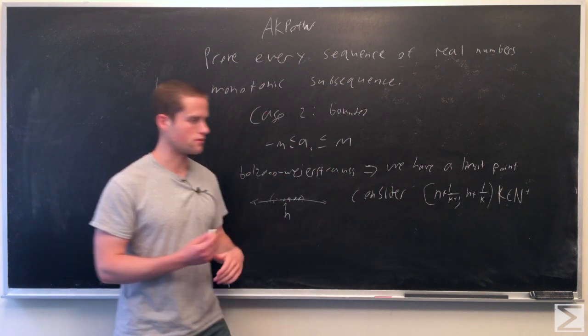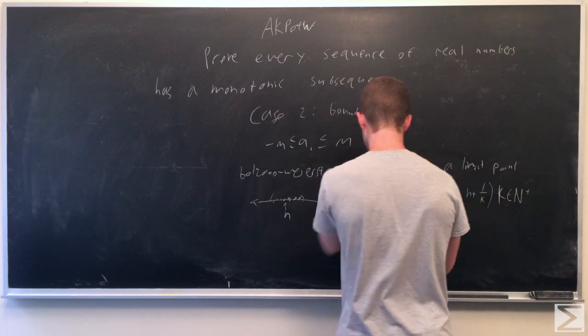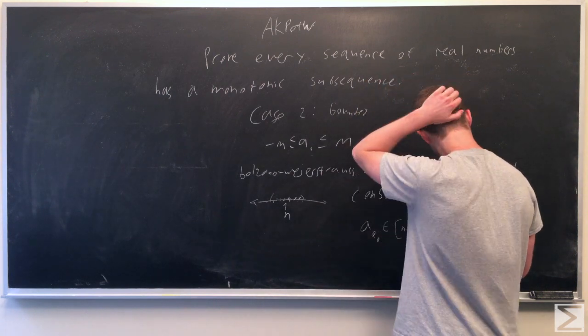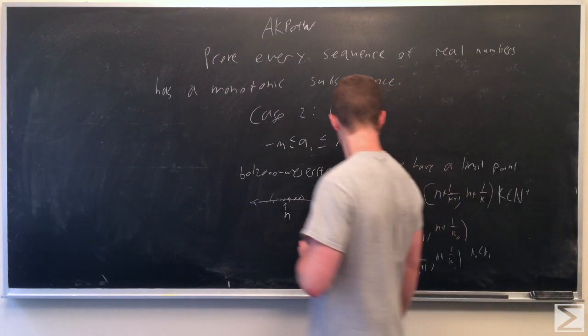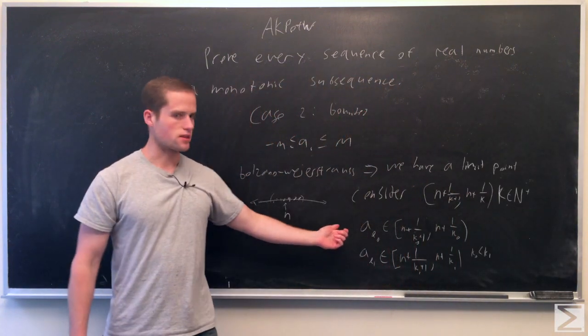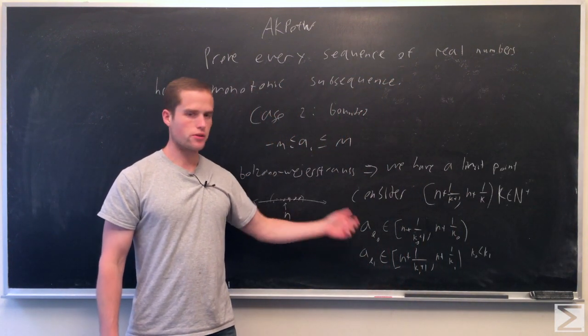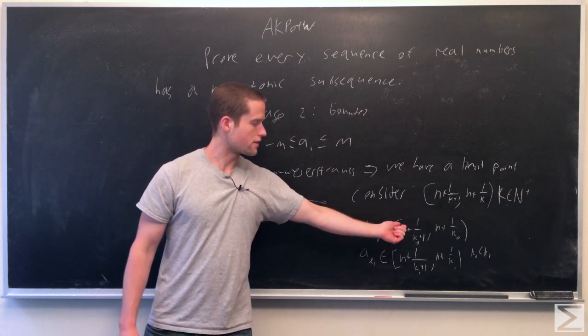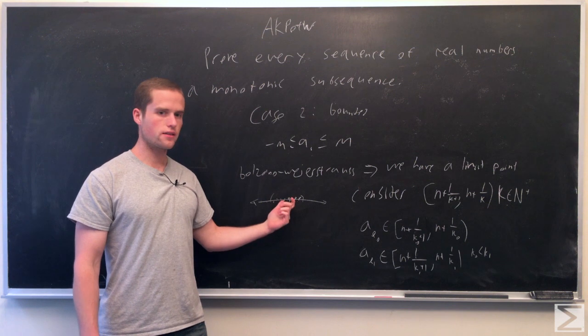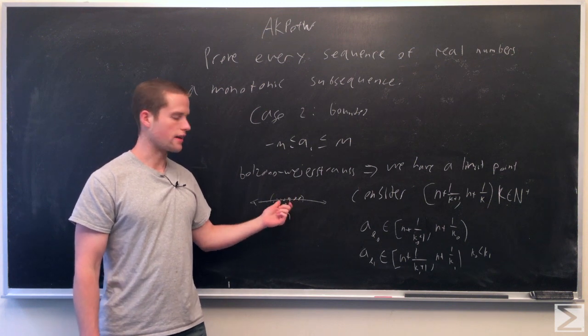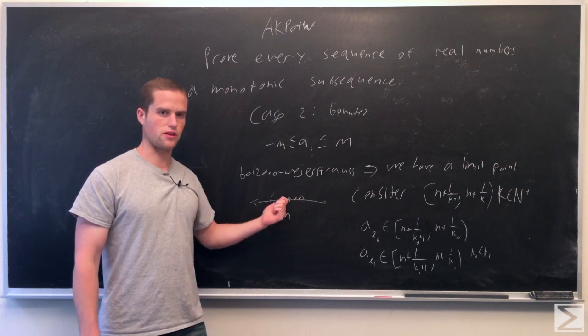That'll be our ak0. First, we just find some interval with al0 in our sequence that's in this interval. This must be the case because we have infinite points greater than n. In any neighborhood of n, we have infinite points greater than n.